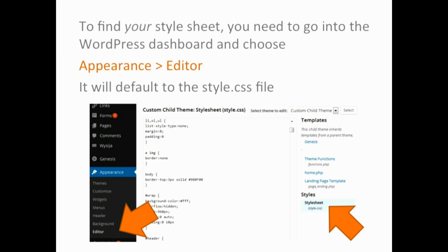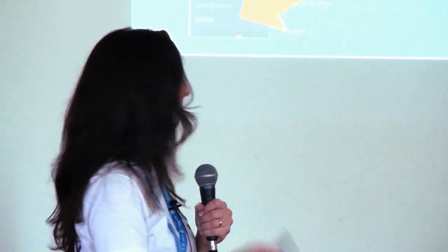To find your stylesheet, you're going to be in the dashboard of your WordPress site under Appearance and Editor — automatically your stylesheet is going to show up. That's the default file. You'll see all these other files too; sometimes there will be a long list of different files. But usually, most of the changes you're going to be making are to the actual style.css sheet — that's what it's going to be called. If your site's more complicated, you'll have other CSS stylesheets and you'll need to look at those.